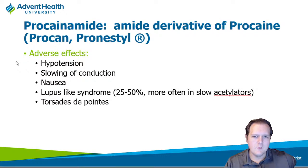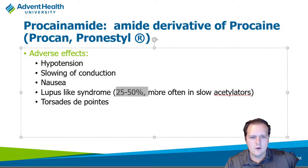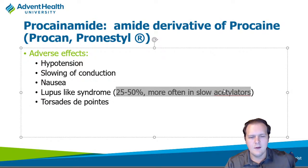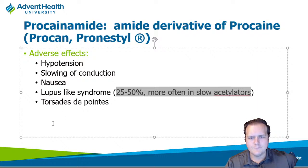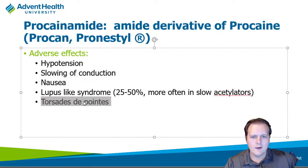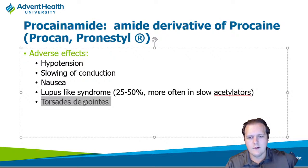Key side effects include some hypotension, probably a little less than quinidine, and a lupus-like syndrome in slow acetylators — typically Caucasian patients, women more at risk. About 25-50% of patients can develop this rash. It's not a drug used super commonly — more niche cases, particularly in cardiology. Torsades is also a risk due to QTc prolongation from extending out the QRS interval.